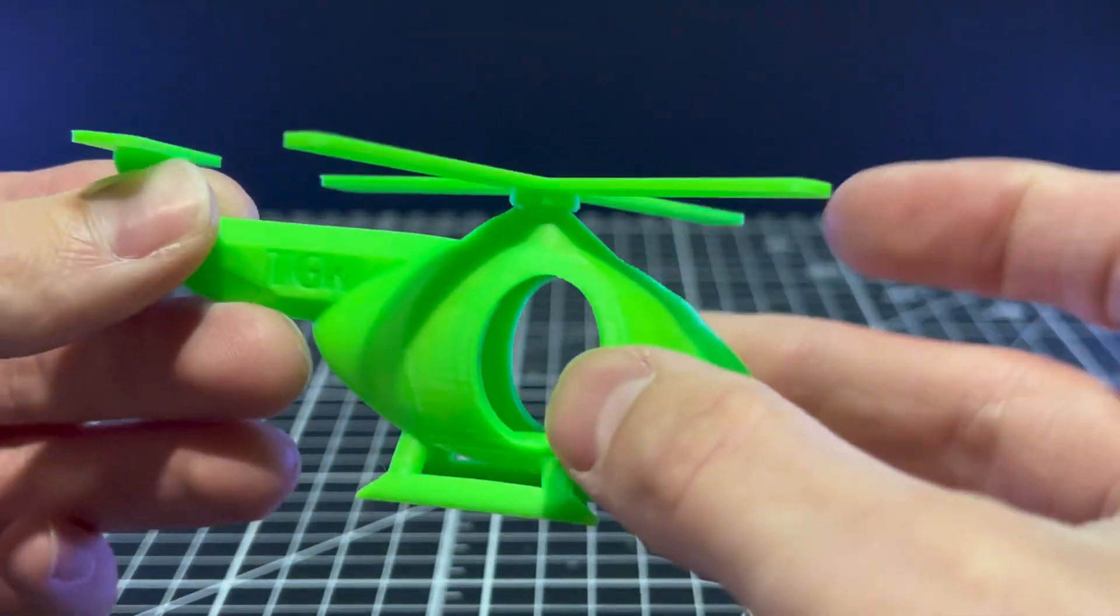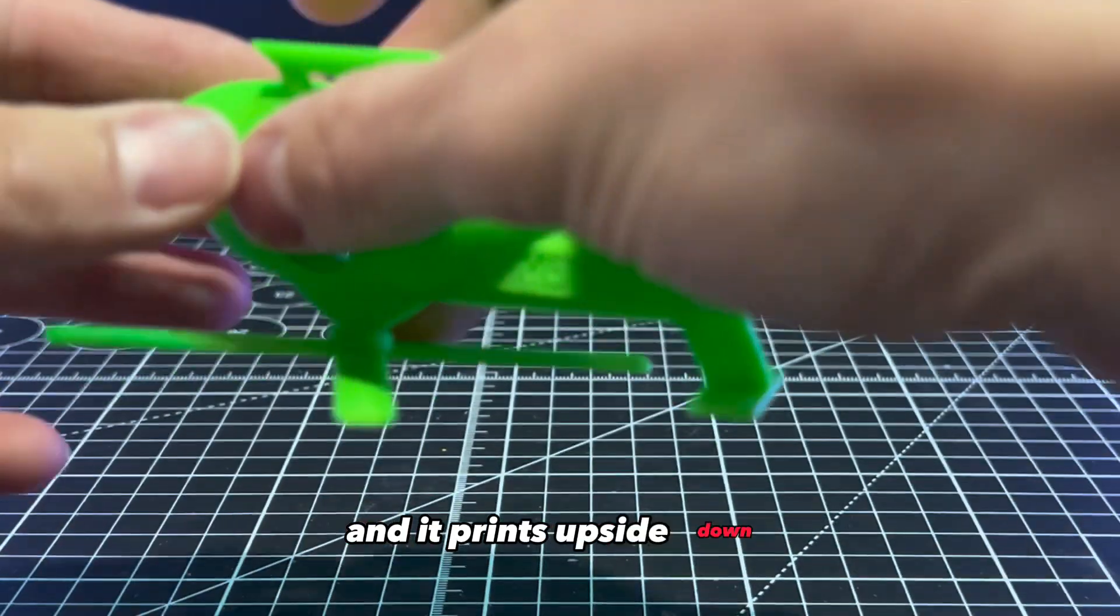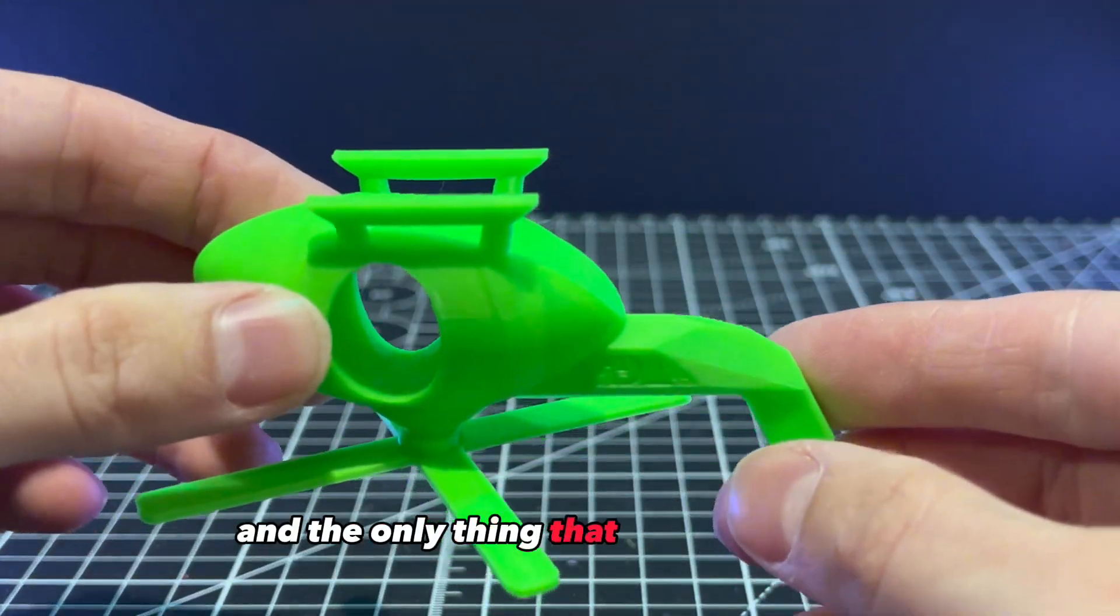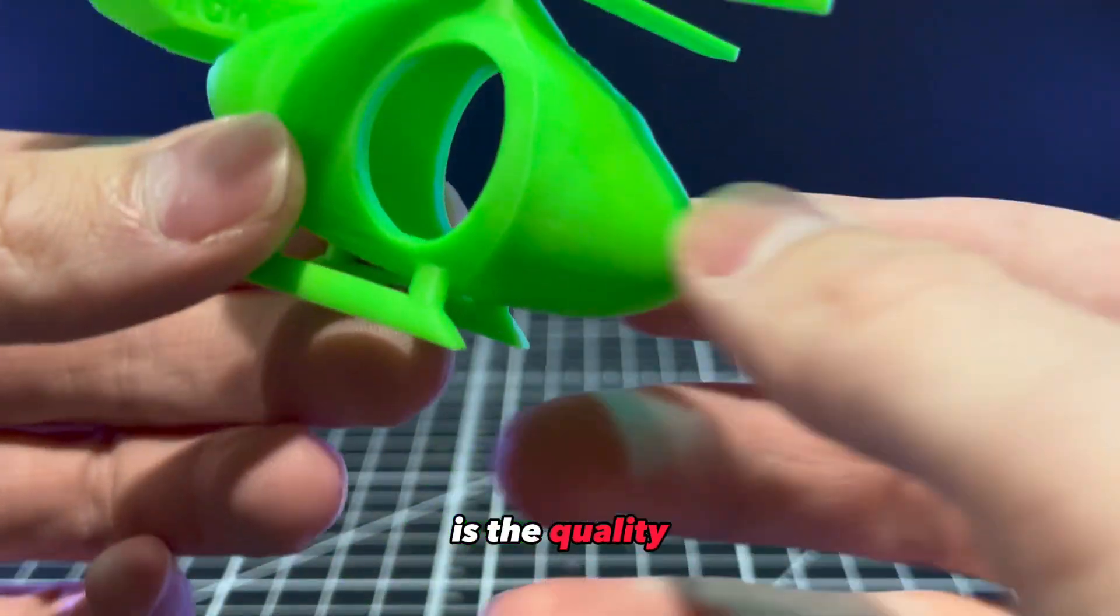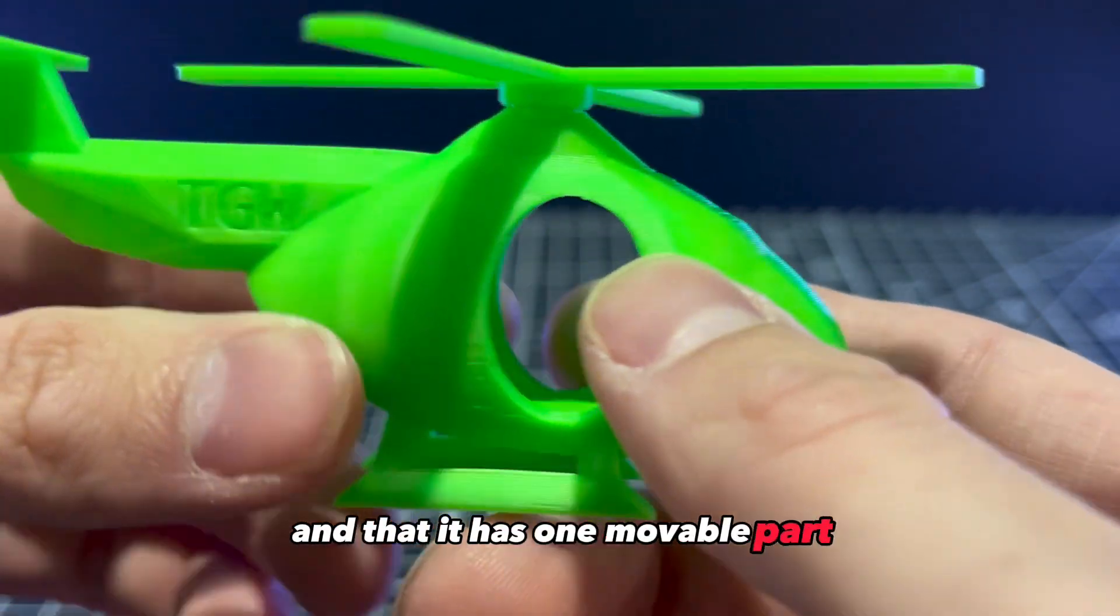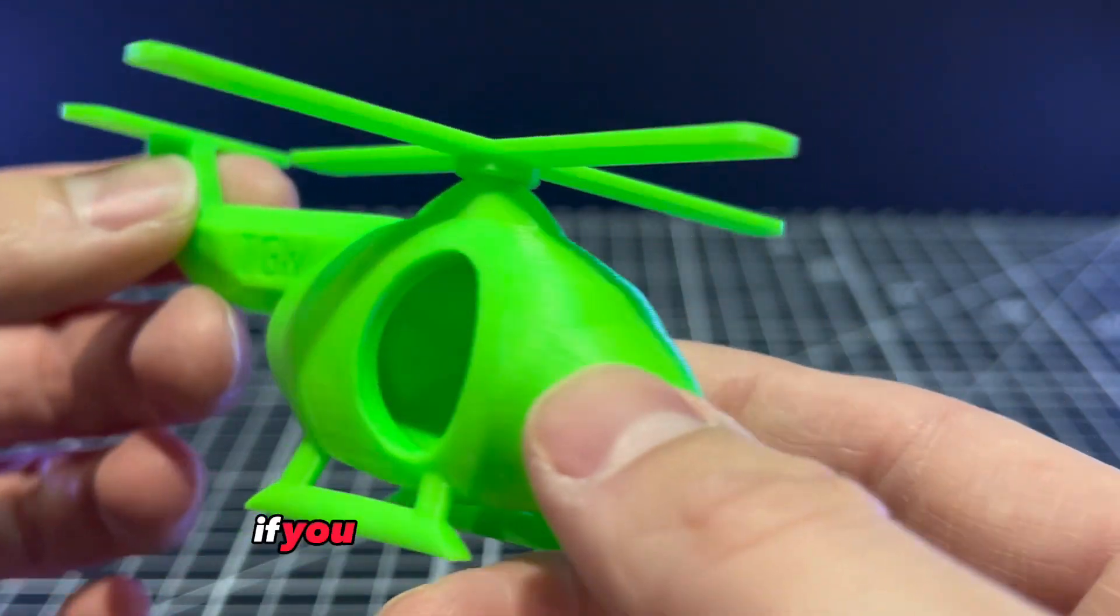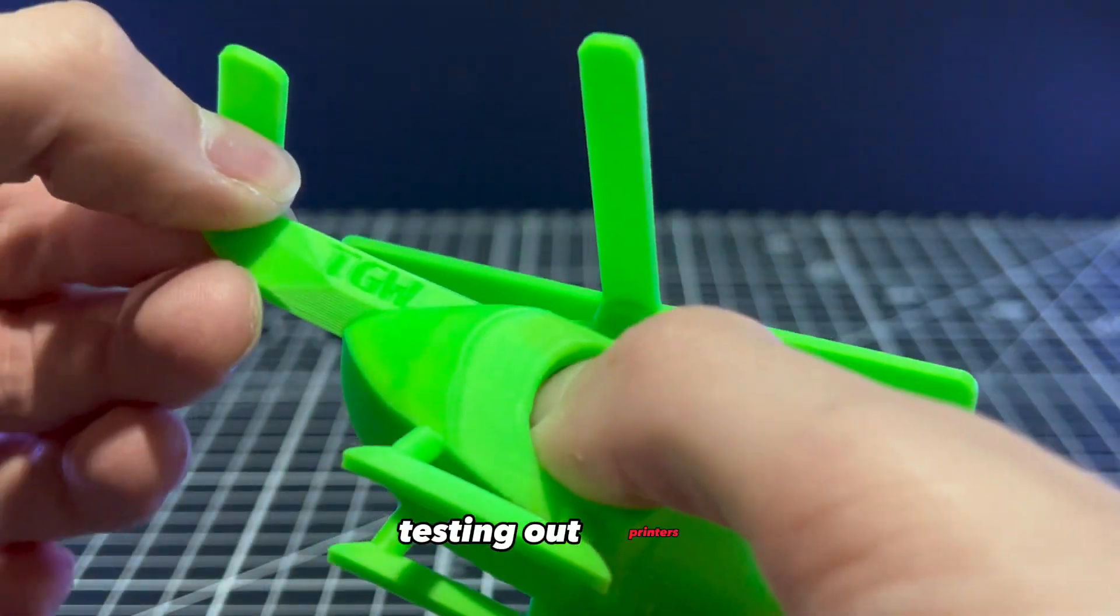This is similar to the Benchy test and it prints upside down. The only thing that I like about this is the quality and that it has one movable part. It's very simple. It's a good test run if you don't know what you're doing testing out printers.